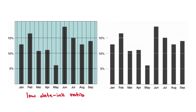On the right-hand side, we see a visualization with the same data but with a high data-to-ink ratio — the only ink used is ink that is actually describing the data directly. Comparing both visualizations side by side, the one on the right is not only more pleasing to the eye, but is also much easier to understand.